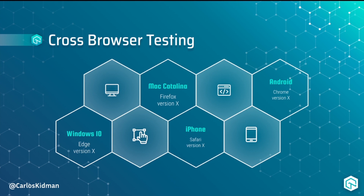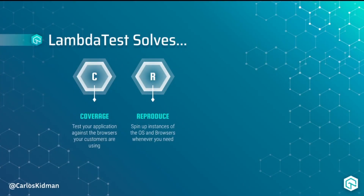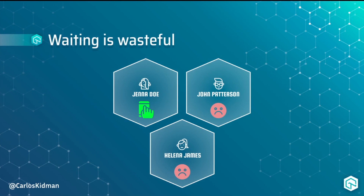Which brings me to the next problem LambdaTest solves: reproducing these environments. If there is only one Android device for the team to use, then only one person can test at a time. All that waiting is wasteful. LambdaTest can spin up as many instances as you need, so your environment doesn't become a bottleneck anymore.